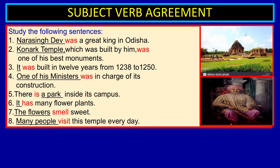Narasinghadev was a great king in Odisha. Konark temple, which was built by him, was one of his best monuments. It was built in 12 years, from 1238 to 1250 AD. One of his ministers was in charge of its construction. There is a park inside its campus. It has many flower plants. The flowers smell sweet. Many people visit this temple every day.